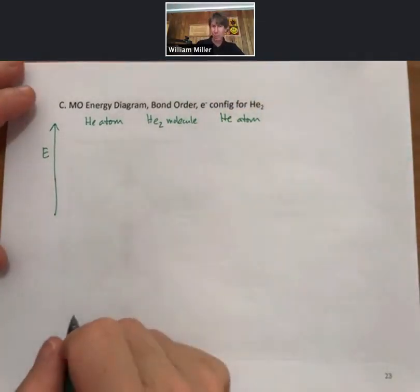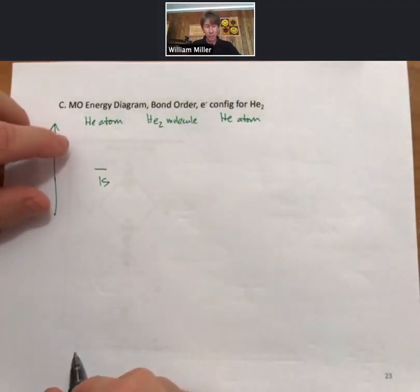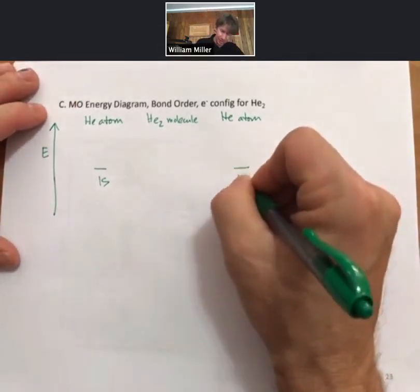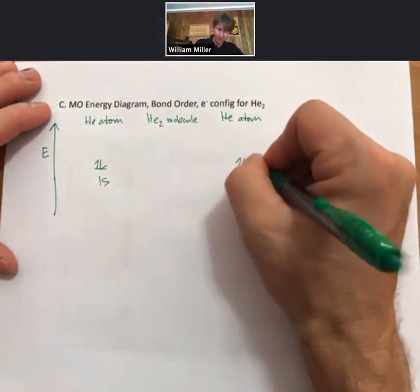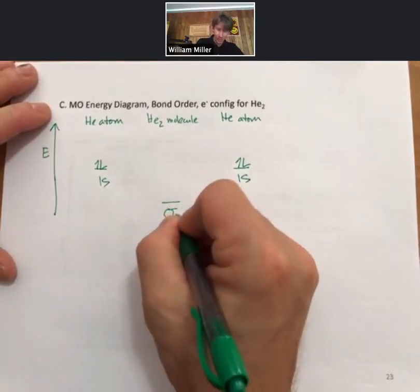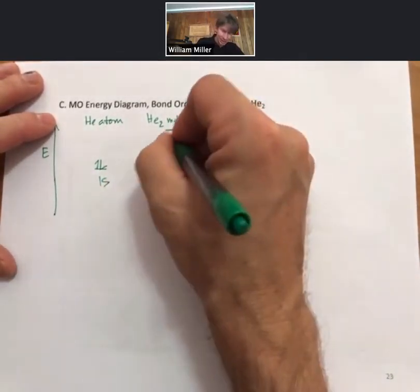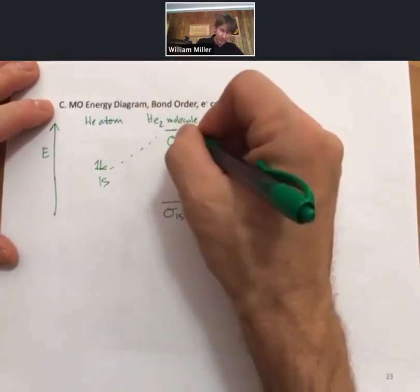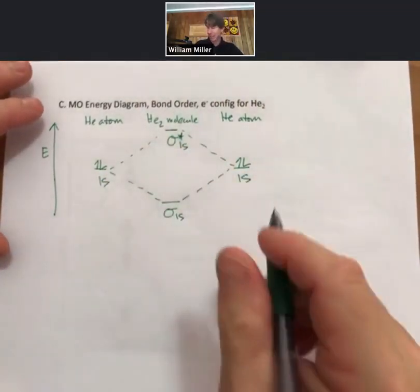We draw the orbital energy diagram that we've done before, but we do the orbital energy diagram for each helium atom. Each helium atom now has two electrons. In making molecular orbitals there is one sigma 1s which is the bonding molecular orbital, and then equally higher than the 1s is sigma star 1s, the antibonding.